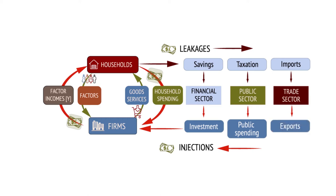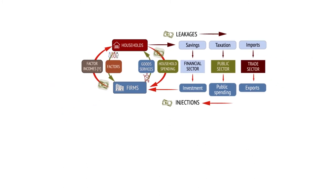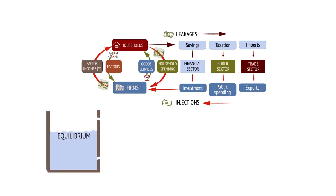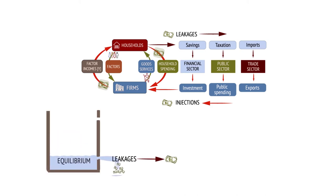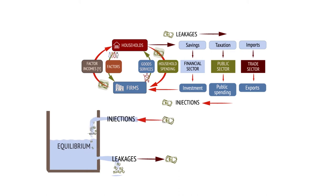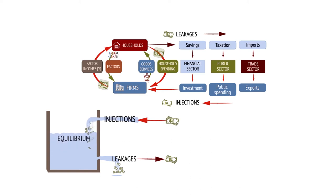The whole economy is in stable equilibrium when leakages are balanced by injections. Leakages reduce the size of national income, while injections increase it. It is only necessary for all injections to equal all leakages, not for the pairs to equal each other. For example, saving does not need to equal investment.